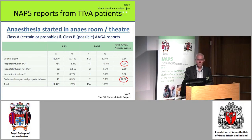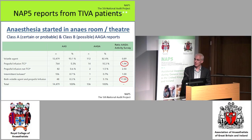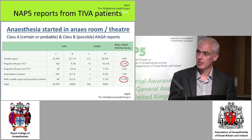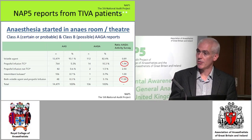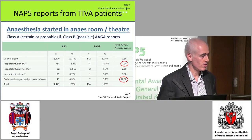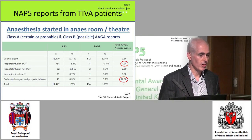We can compare these figures with figures from the activity survey. This shows the proportion of anaesthetics given in anaesthetic room or theatre which have volatile maintenance and intravenous maintenance with TCI, compared with the proportion of reports in NAP5. Looking at the ratio, it's nearly twice as common for there to be reports in patients who've had TIVA in theatre than with volatiles — so there's a higher incidence of reports with intravenous anaesthesia.